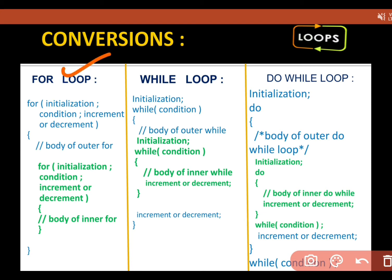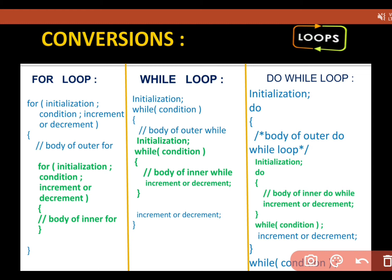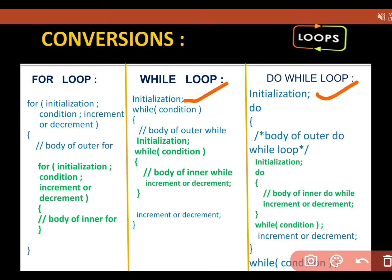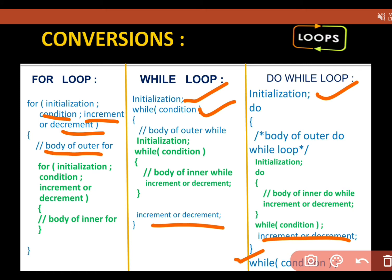How do we convert? If we are given a for loop and need to convert it to while or do-while, the initialization part goes here, condition is placed here, and increment/decrement is placed at the end. The same applies for the inner loop — inner for, inner while, or inner do-while follow the same conversion rules.